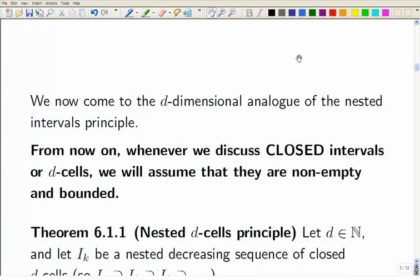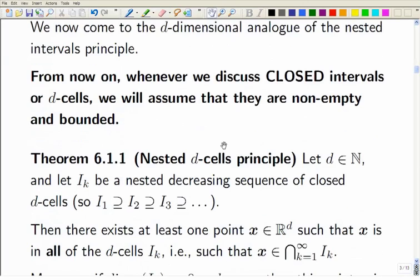So what's the d-dimensional analogue of the nested intervals principle? Again, if I talk about closed intervals or d-cells now, let me assume that I'm talking about non-empty ones in case I forget to say that, because the empty cases are not only trivial and uninteresting, it also renders the results false because if you intersect an empty d-cell with some other d-cells, then of course you get the empty set. That's not interesting. So I'll remind you that we're assuming non-empty here.